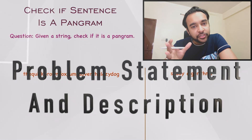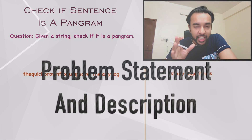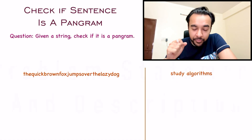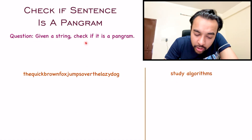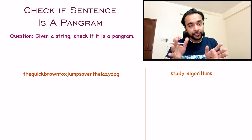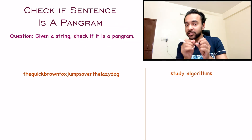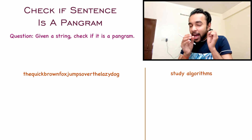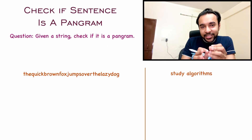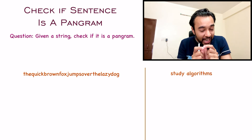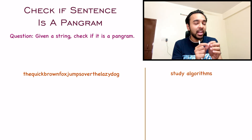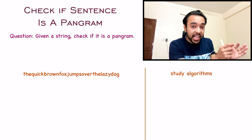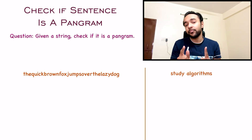First of all, let's try to make sure that we are understanding the problem statement correctly. In this problem, you are given a string and you have to check if it is a pangram. A pangram is just a special type of string which has all the characters of the English alphabet from A to Z at least once.